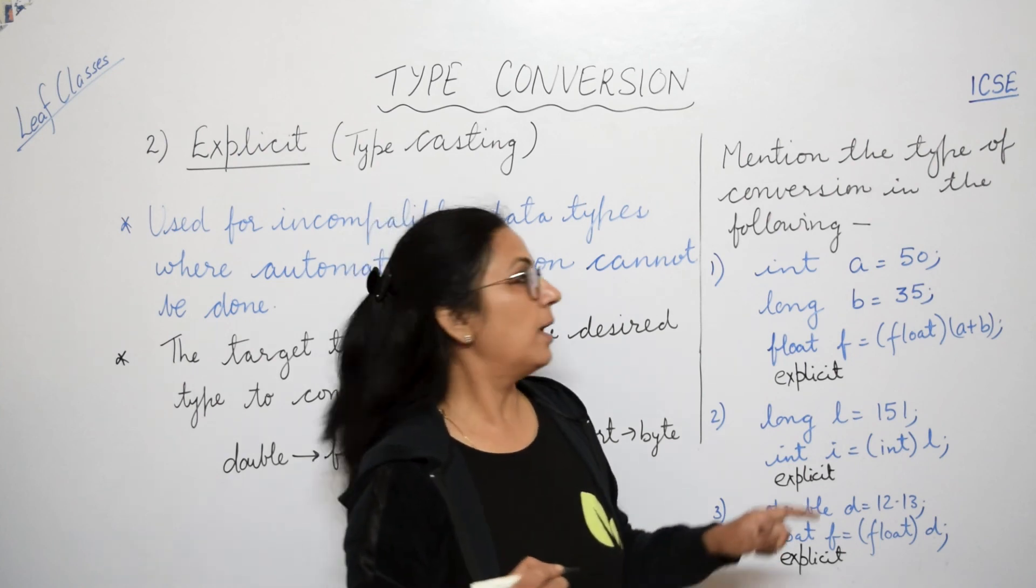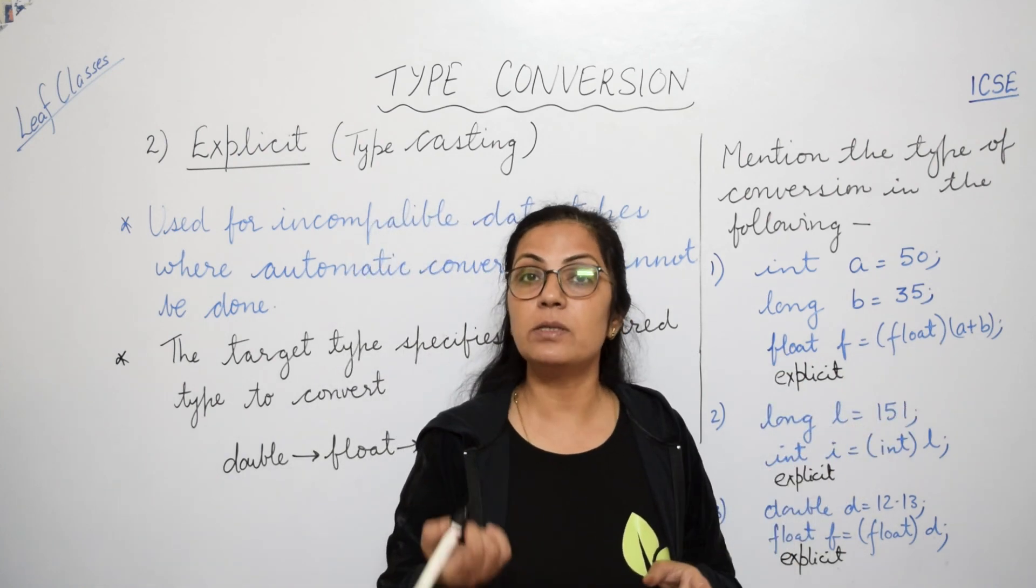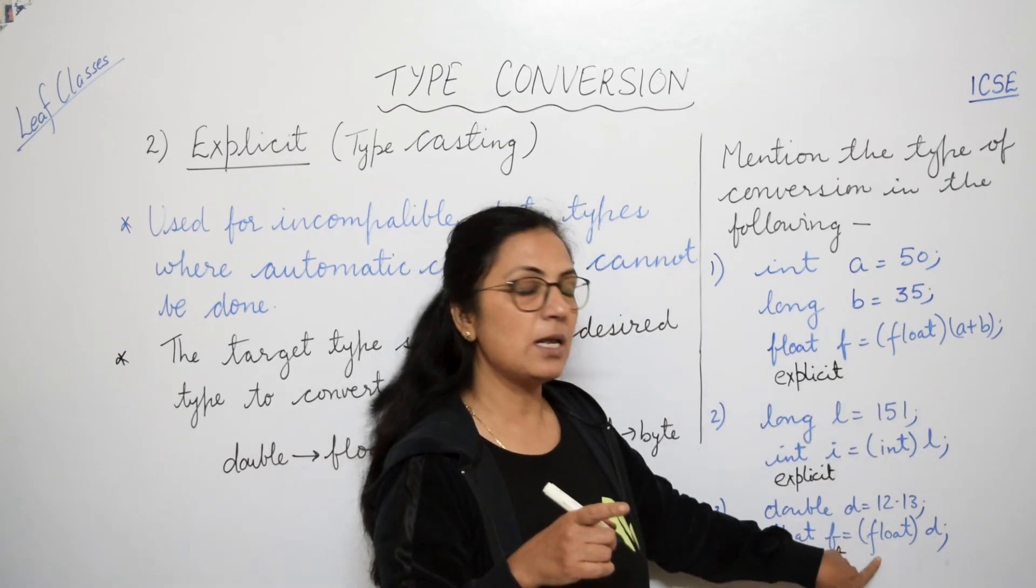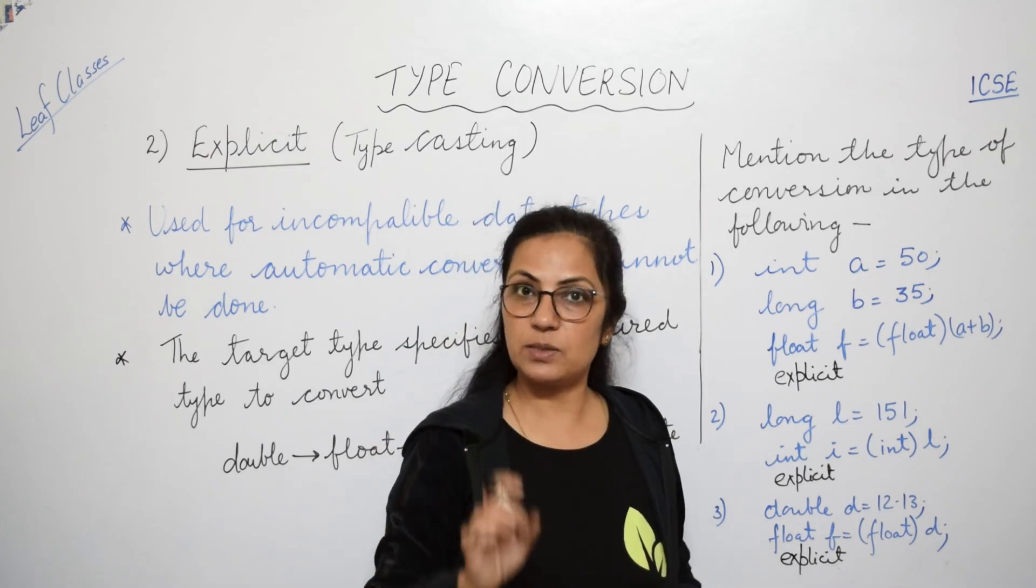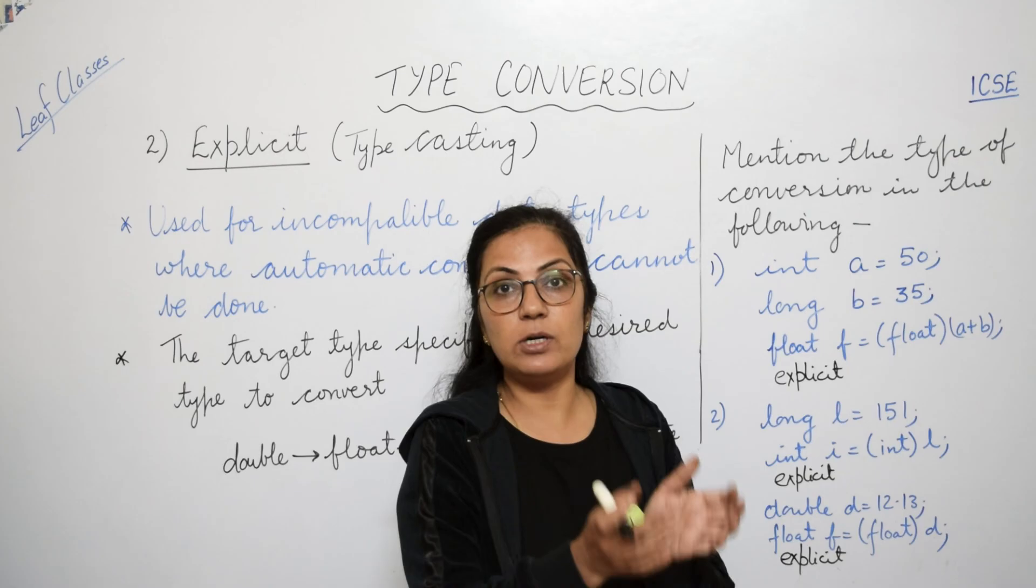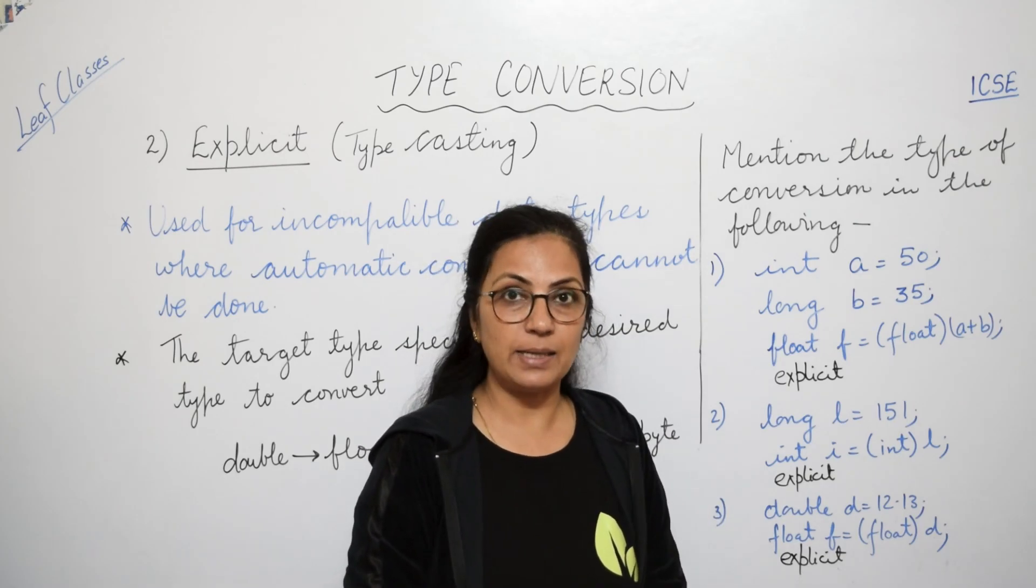Now children, just a shortcut. Agar kisi bhi conversion mein aapse puchha ja raha hai, kaun se type ka conversion hai, aur data type mentioned hai like this in brackets, so aam bandh karke wahan pe explicit likh do. Because yaha pe hum forcefully conversion kar rahe hain. That is why it is explicit conversion, or type casting.